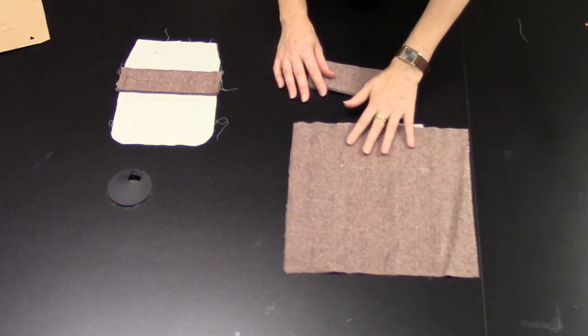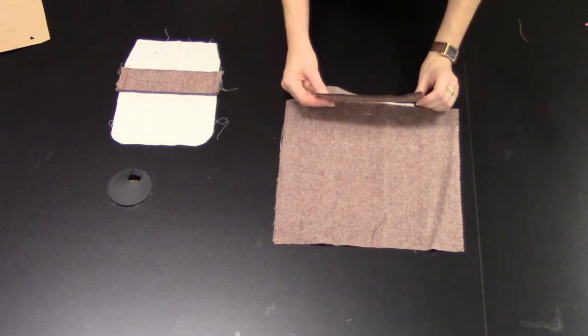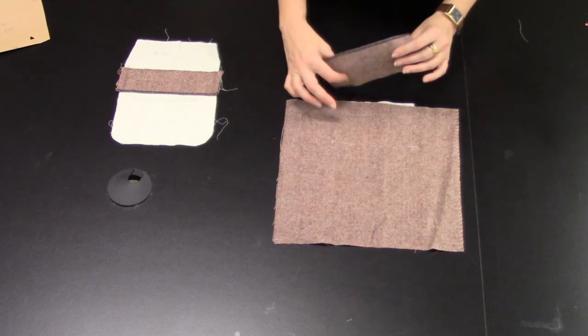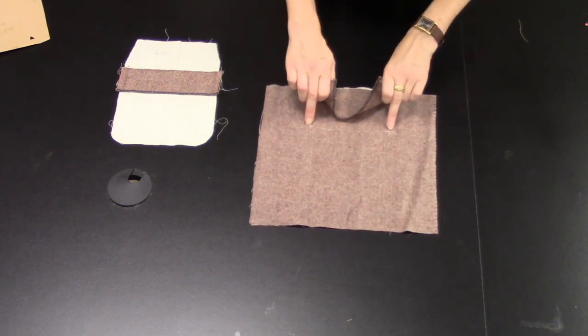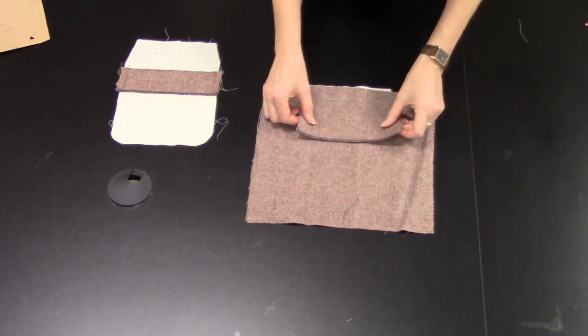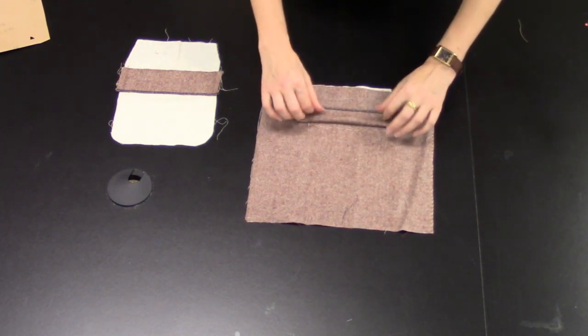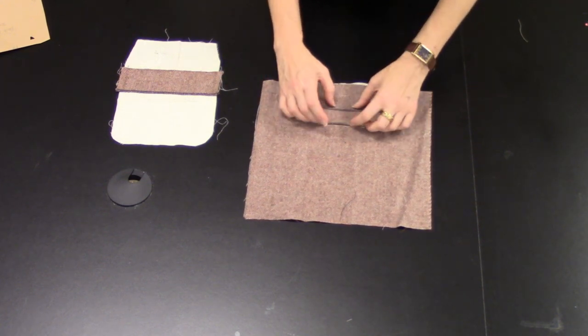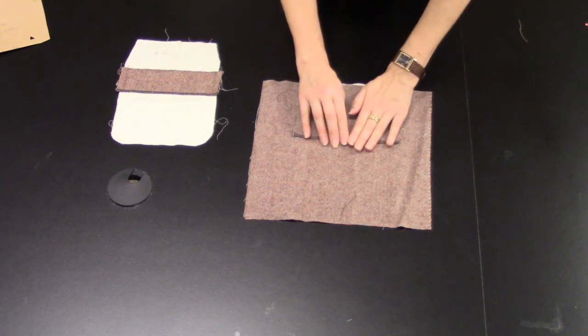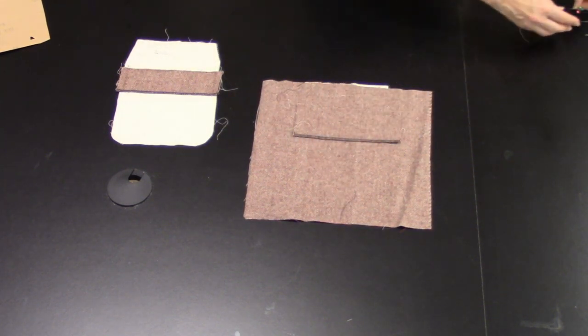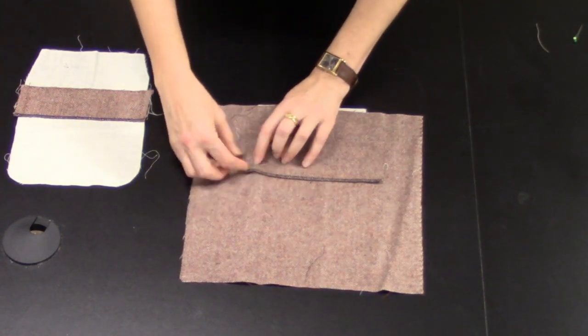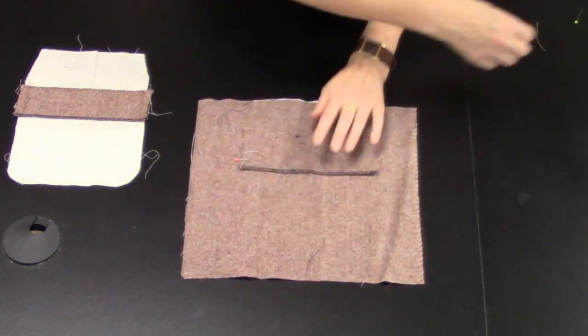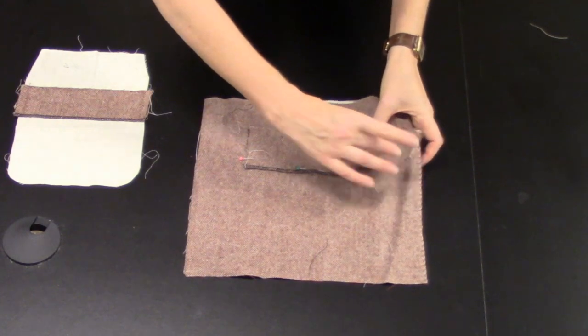Then from the right side let's work with the pocket piping or the pocket welts or the pocket lips—whatever you want to call that—and we're going to place this centered on the pocket placement line. If you have stripes or plaids this is the time to match those up and the serging is toward the hem of the garment. We want to pin this in place to get that ready.